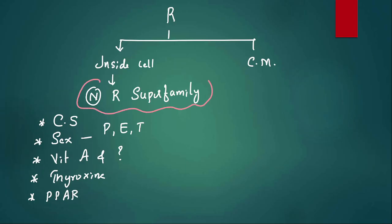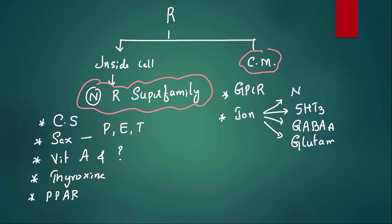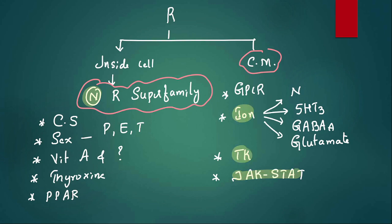On the cell membrane we have G-protein coupled receptors, ion channel receptors (nicotinic, serotonin 5-HT3, GABA-A, and glutamate including NMDA and AMPA subtypes), tyrosine kinase receptors, and JAK-STAT receptors. Any receptor not fitting those categories is a G-protein coupled receptor.